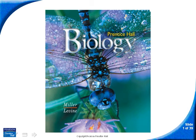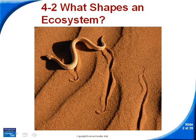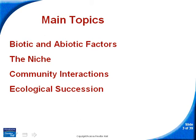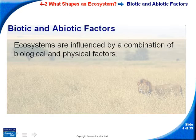This is the 4-2 podcast for chapter 4, part 2: 'What Shapes an Ecosystem.' There are four topics we're going to look at: biotic and abiotic factors, the niche, community interactions, and ecological succession. Starting with biotic and abiotic factors — ecosystems are influenced by a combination of biological and physiological factors.